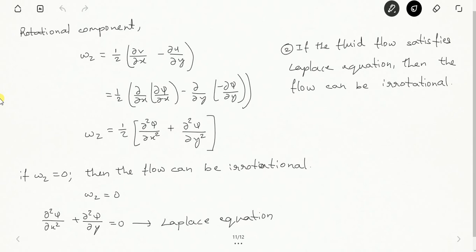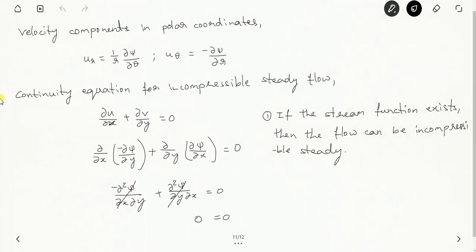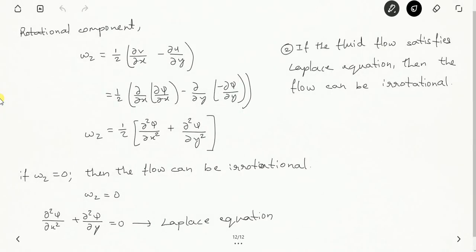These are the two properties of the stream function. The first property: if the stream function exists for a given fluid flow, then the flow is incompressible and steady. The second property: if the stream function satisfies the Laplace equation, then the flow is irrotational. I hope you understood this derivation. If you have any questions, please feel free to comment, and thanks for watching.